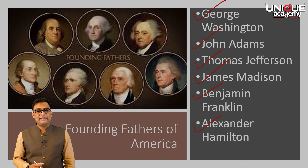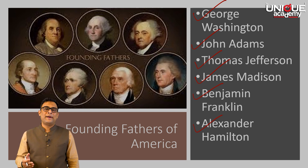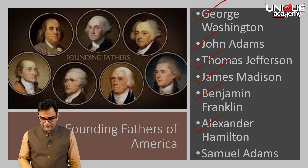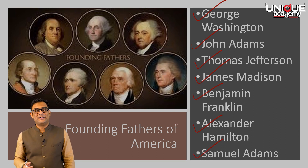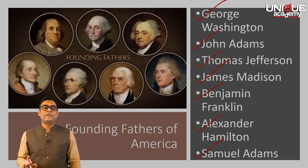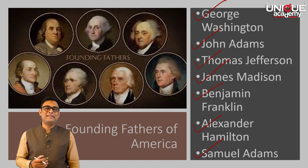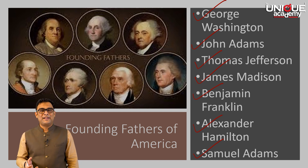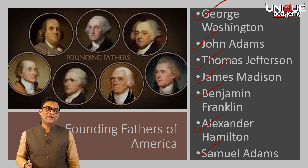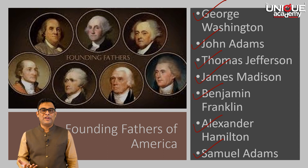The next founding father is Alexander Hamilton, who went on to occupy some important posts even after the revolution. And lastly, we have the great radical leader Samuel Adams. Samuel Adams was the person who founded the Sons and Daughters of Liberty. He was also behind the committee of correspondence, and the Boston Tea Party was also the brainchild of Samuel Adams. All of these gentlemen, through their unique experience, talent, and contribution, created and shaped the course of American history during and after the revolution.